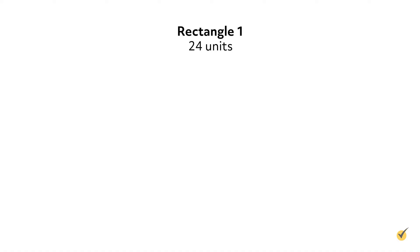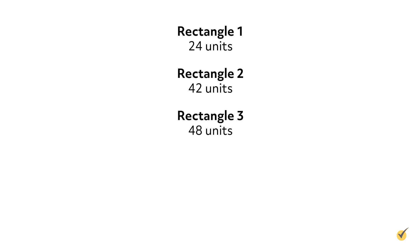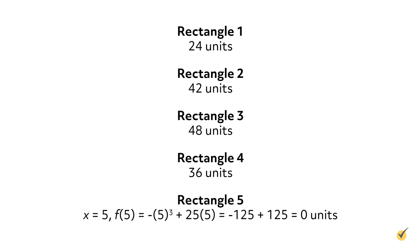Let's now compute the right Riemann sum. For each of the five rectangles, we need to compute the heights at the right corners. The first rectangle's right corner lies on x = 1; we've already calculated that height to be 24. The second rectangle's right corner lies on x = 2, and since f(2) = 42, the second rectangle is 42 units tall. The third rectangle ends at x = 3 with a height of 48. The fourth rectangle ends at x = 4 with a height of 36. The fifth rectangle ends at x = 5; f(5) = −5³ + 25(5) = −125 + 125 = 0, so the last rectangle has a height of 0.